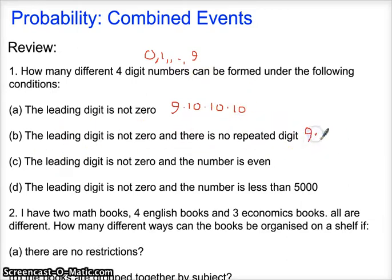The leading digit is not zero and there's no repeated digit. Okay. So the first one's not zero. How many choices are for this other for the second digit? Actually, I have nine choices for the second digit. It could be zero, but it can't be whatever the first digit is. So there's nine choices for that. After I've picked those two digits, there's eight choices for the third one. And then there's seven choices for the last one because they can't repeat.